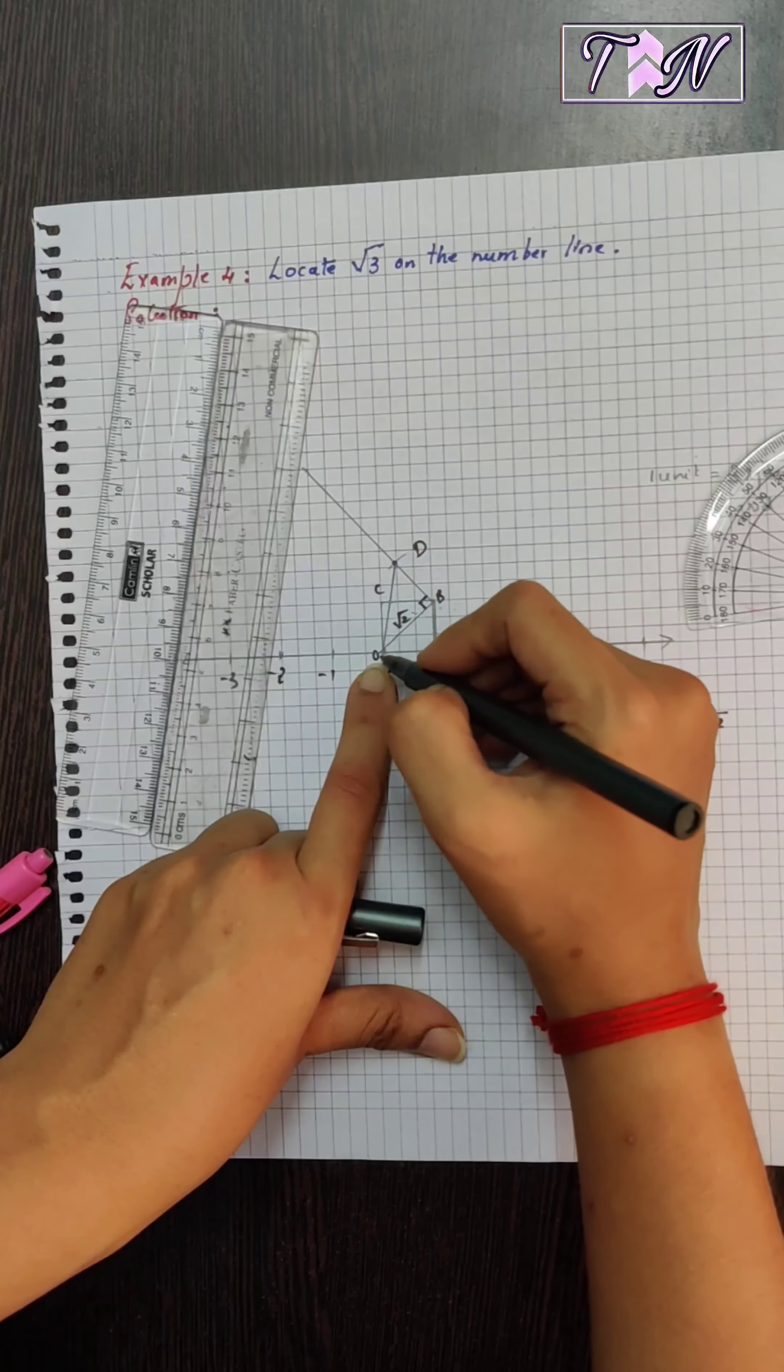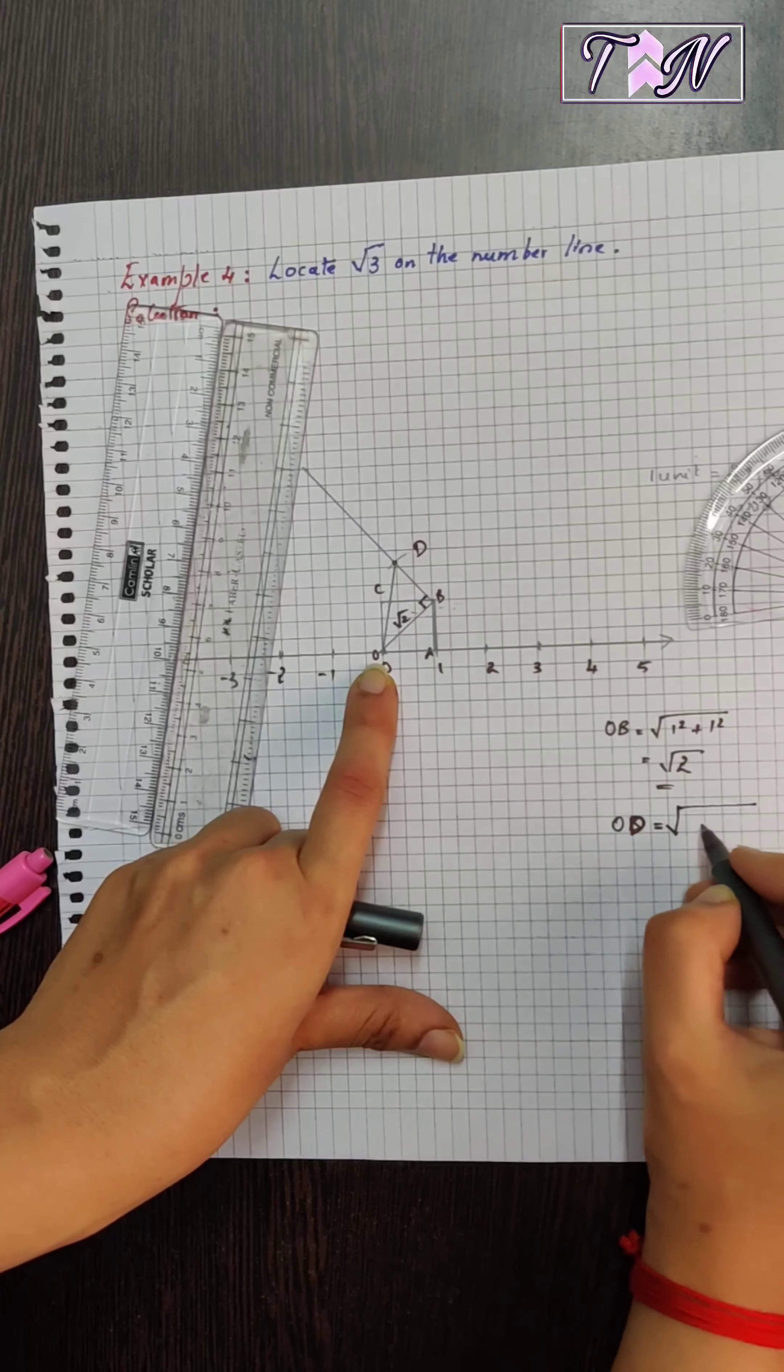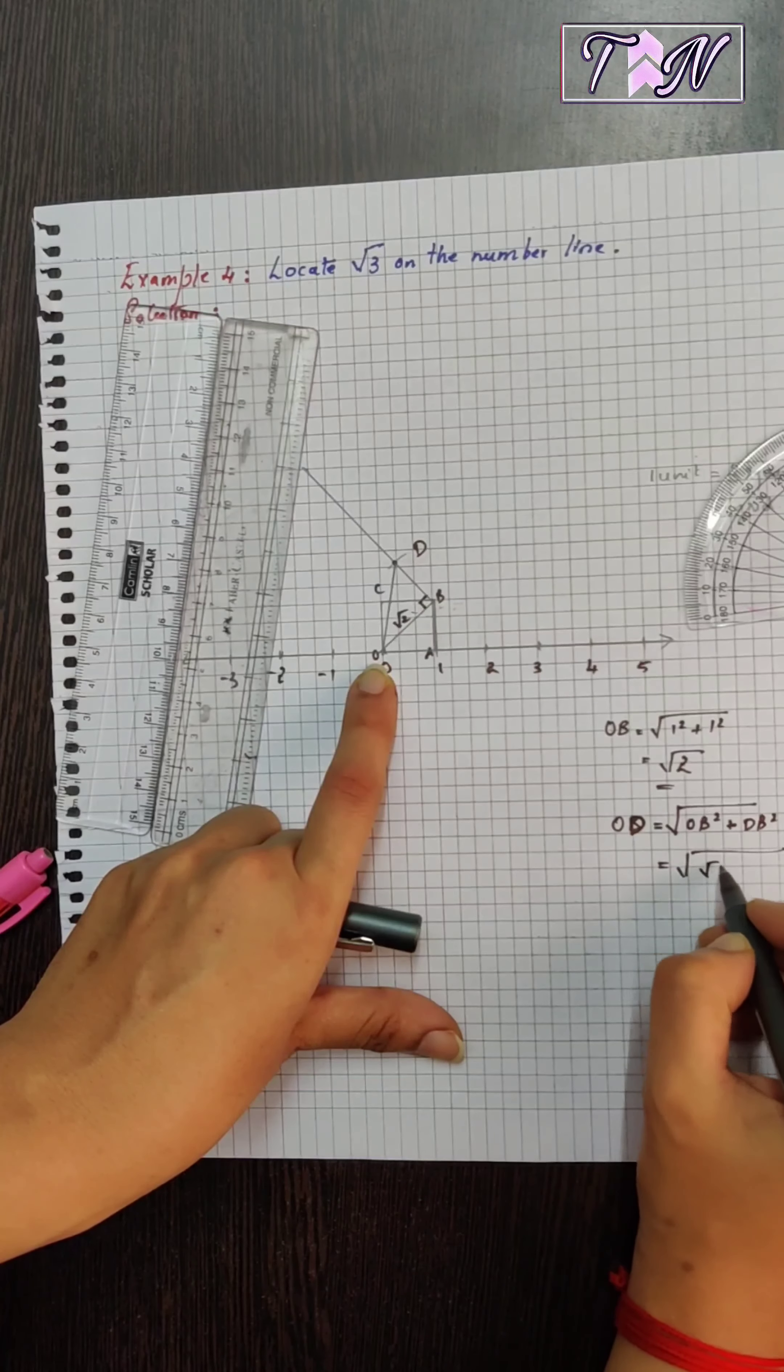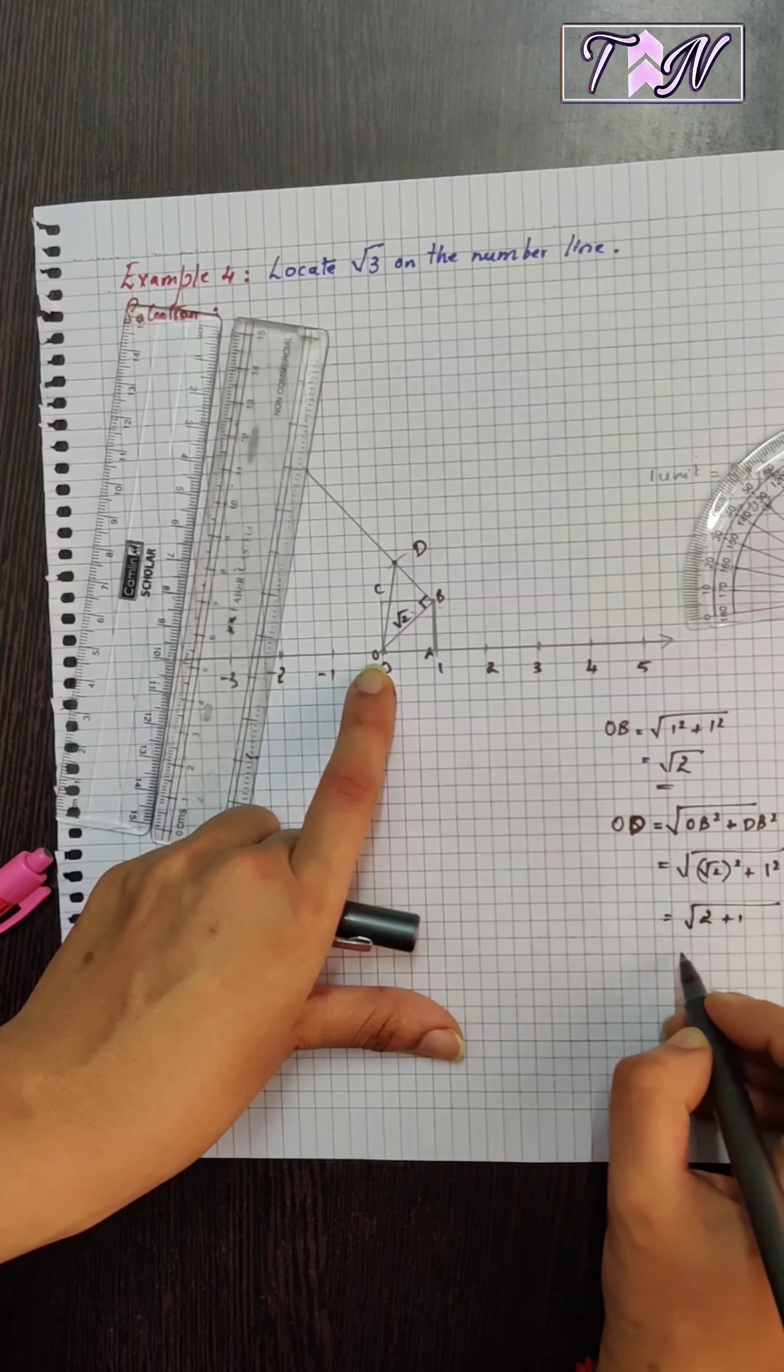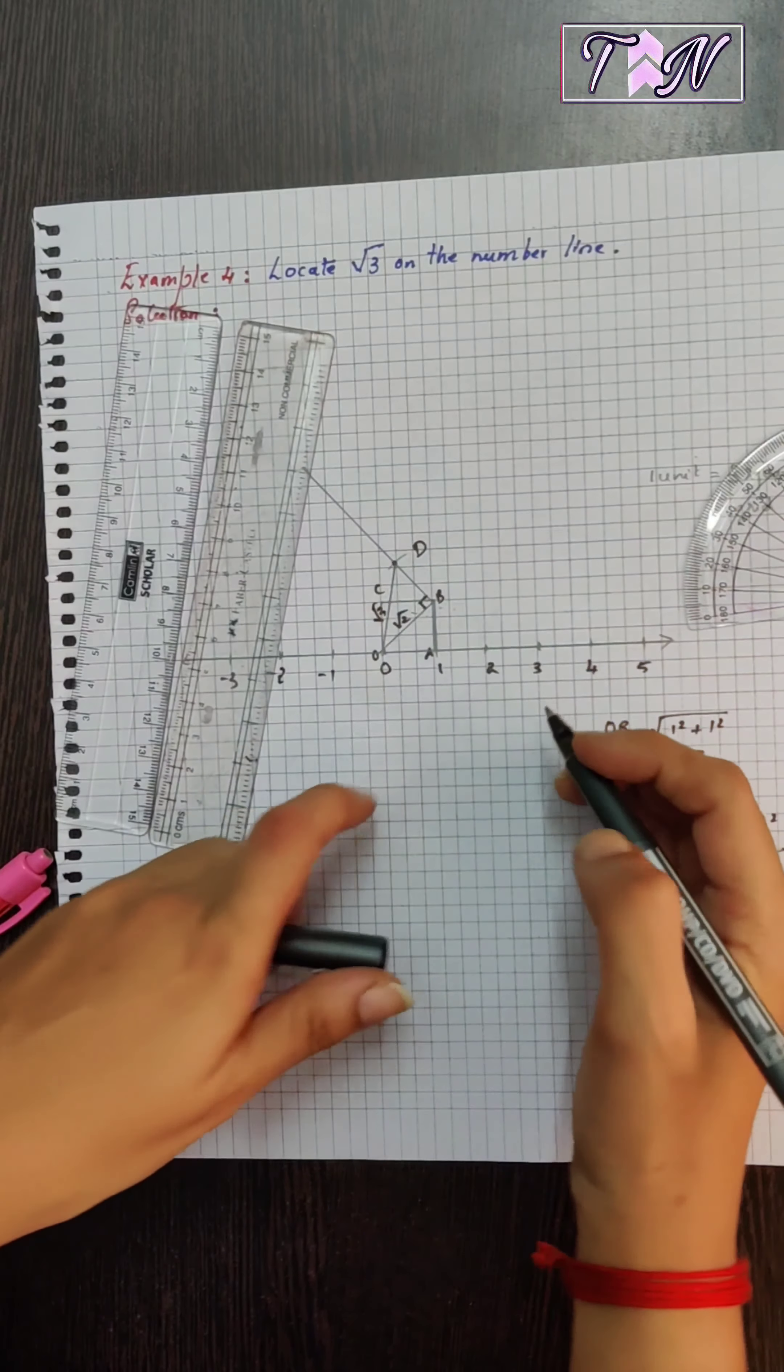Now, this becomes the hypotenuse and hence, if we calculate what is OD, we get it is root of OB square plus DB square from Pythagoras theorem. If I apply the values, it becomes OB is root 2 square plus DB is 1 unit square. So, it becomes 2 plus 1 and that is root 3. So, OD is root 3.